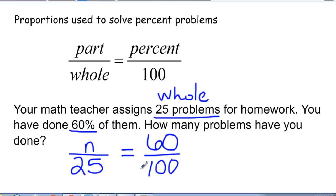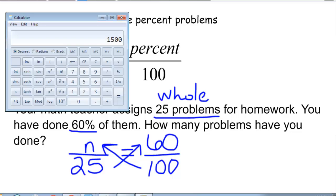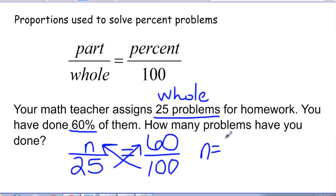Now I'm going to cross multiply and solve this. So I would need to do 25 times 60 and then divide that by 100, and that would give me that n equals 15. And so now I know that I have done 15 problems. So I could write that out, my answer would be I have done 15 problems.